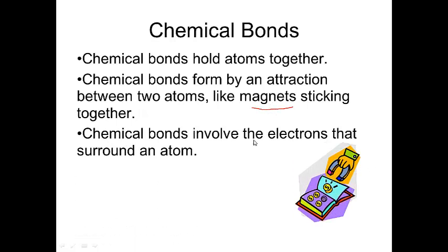And the chemical bonds are going to involve the electrons that are going to surround the atom. So the number of protons is the same as the number of electrons. However many electrons are there, that's how many are going to be involved with making the bond.